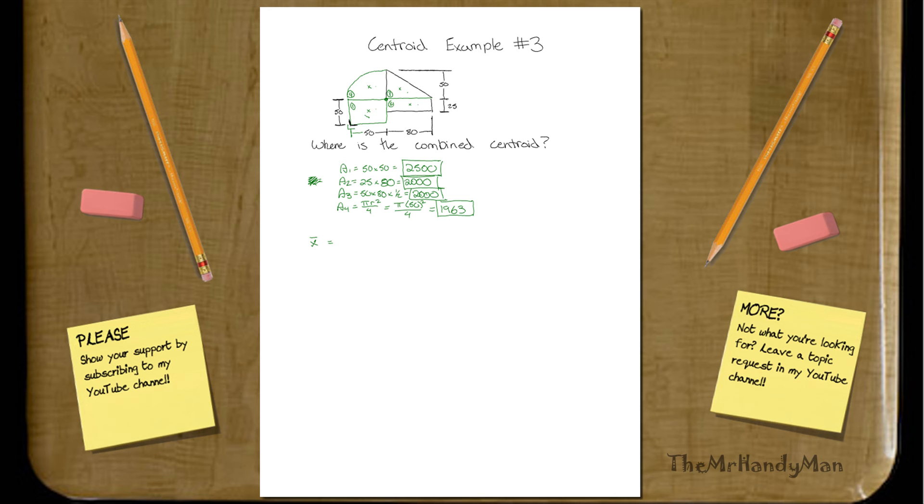So now let's calculate our x-bar, finally. A1. Where is the distance? It's halfway through, so it's only 25 units away. Times the area, which is 2,500. Let's keep going. Area 2. That's going to be the full length of A1 plus half the length of A2, right here. Half the length. That's 40 units. So that will be a distance of 90 times the area of A2, which is going to be 2,000.